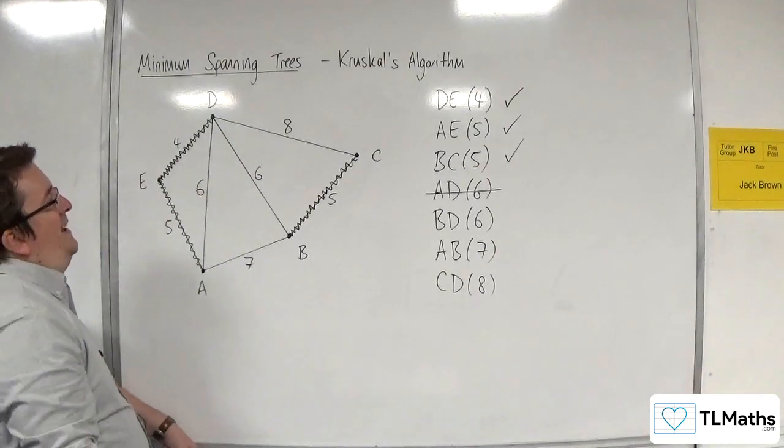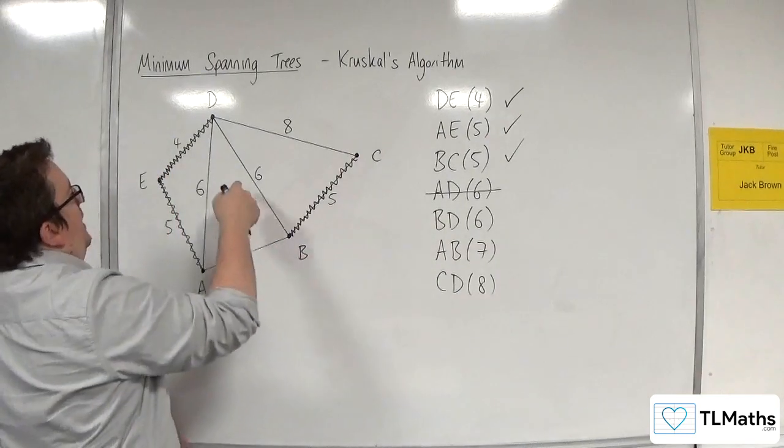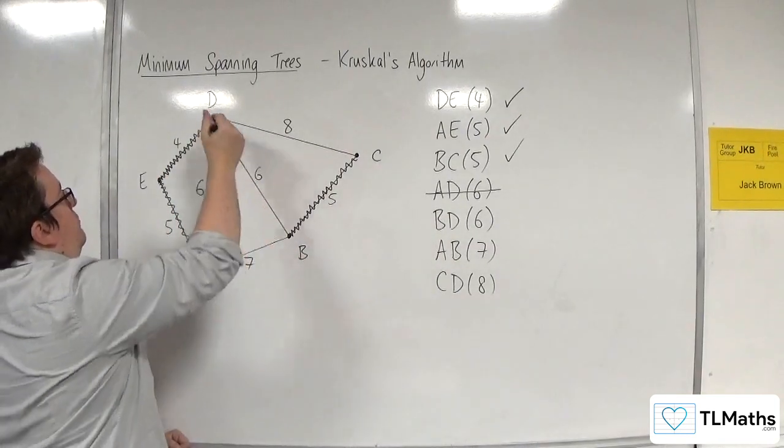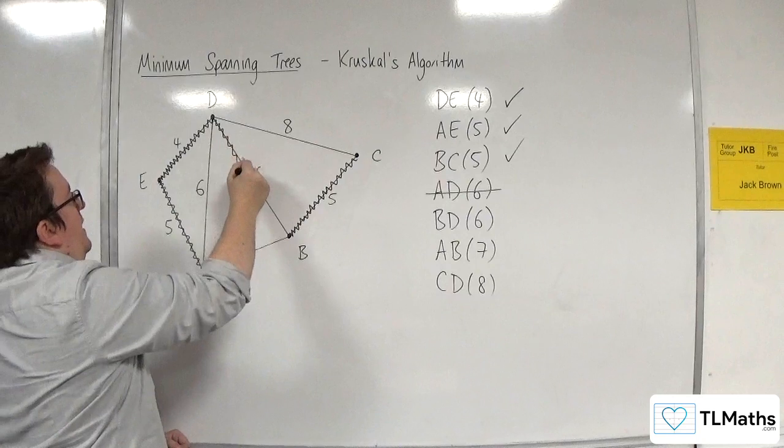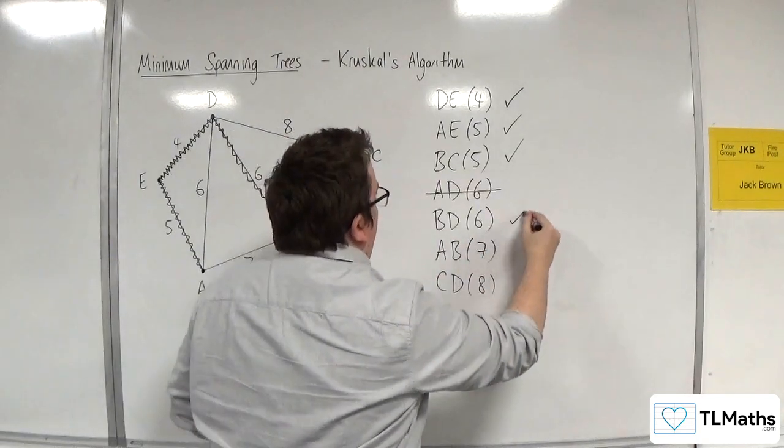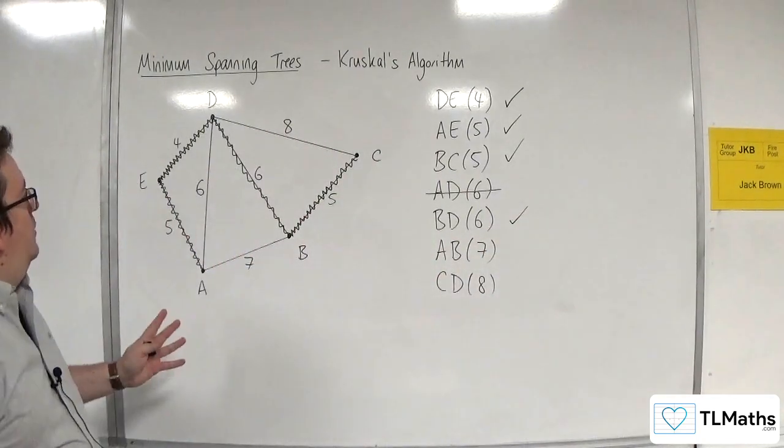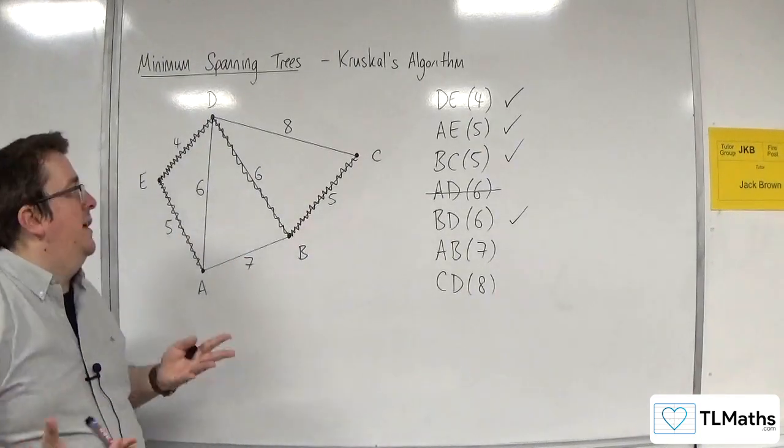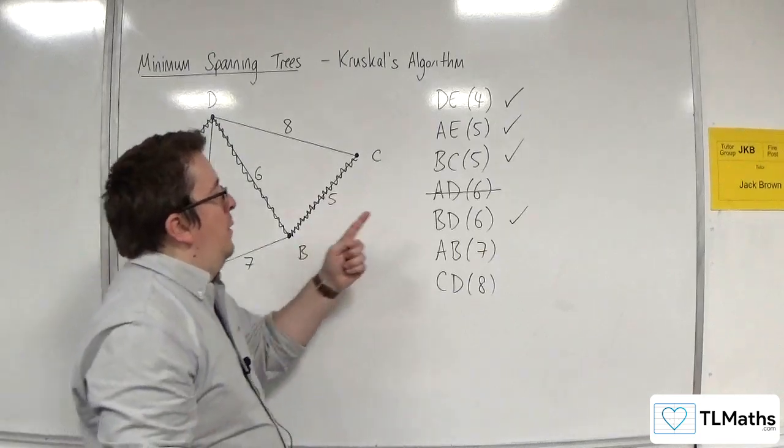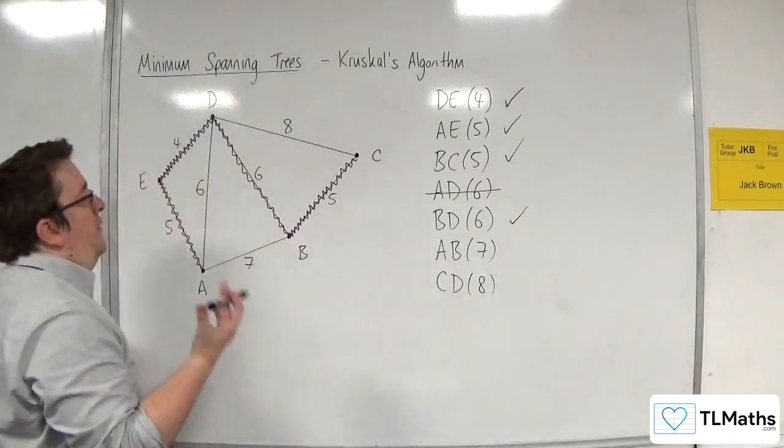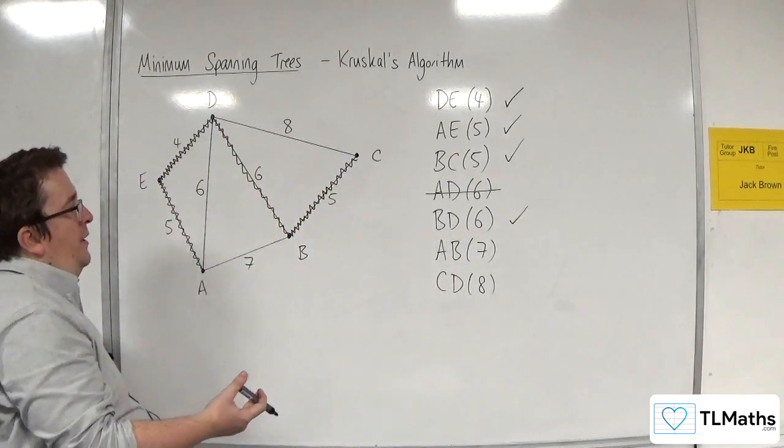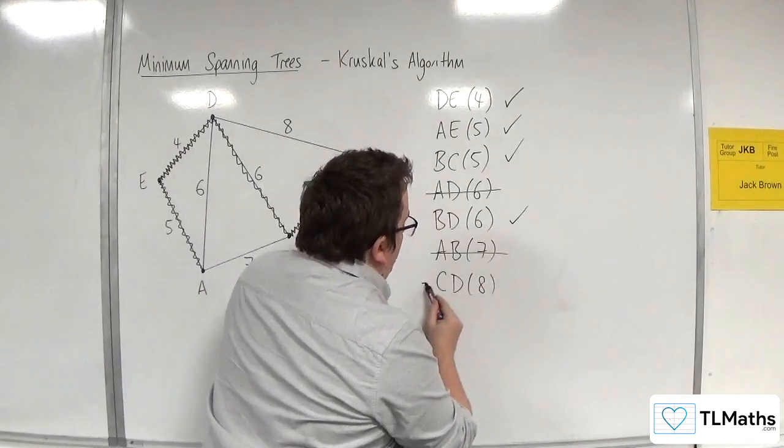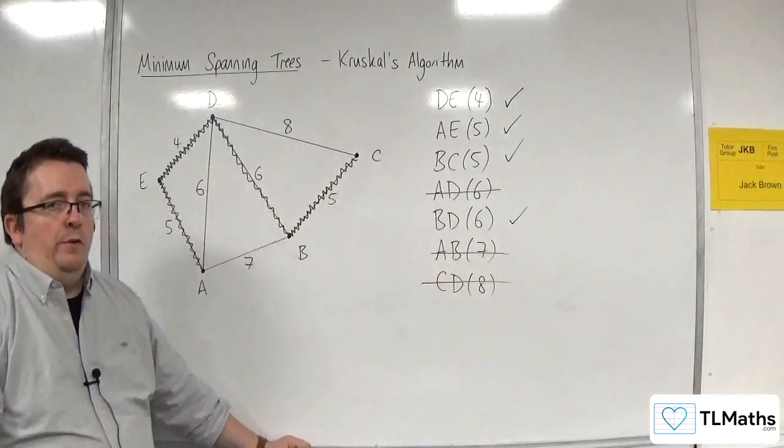Right, next one is BD, which is 6. Now, will that create a cycle? No. But it will connect them together. So I'll have that one. And you can see that now, A, B, C, D, and E are all connected. It is a connected graph. So I don't need these two edges. They, in fact, would create cycles. So I want to make sure I get rid of those.